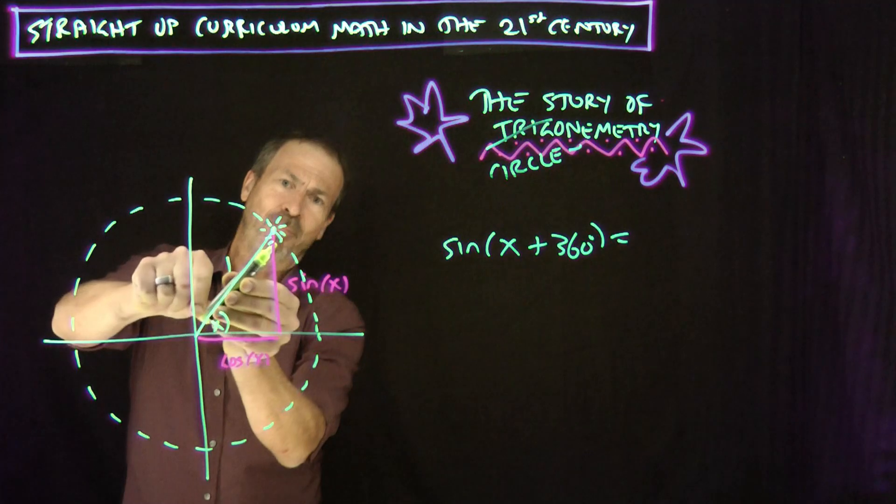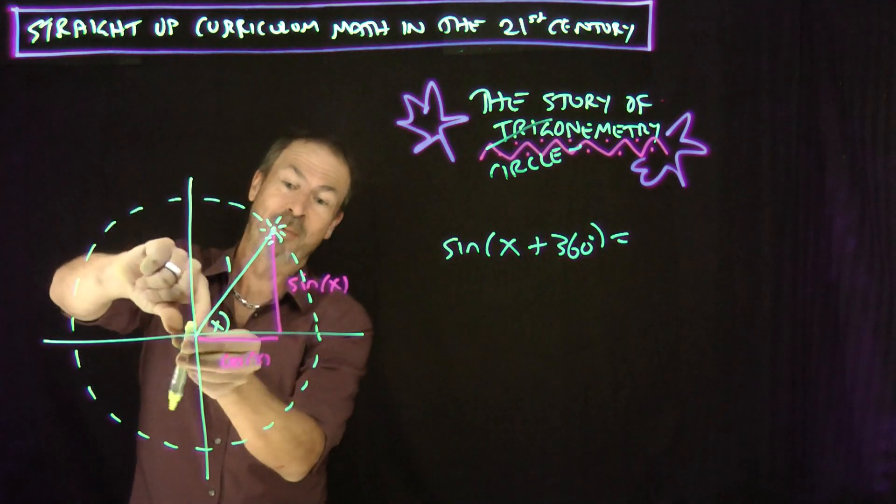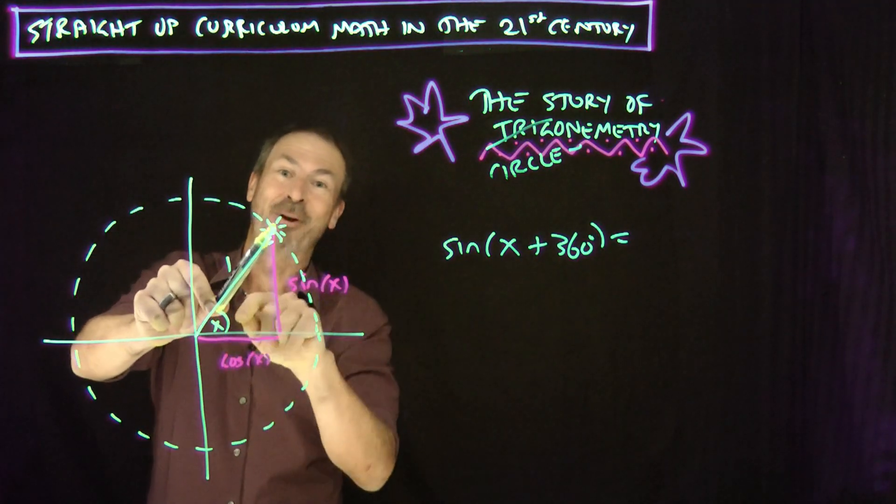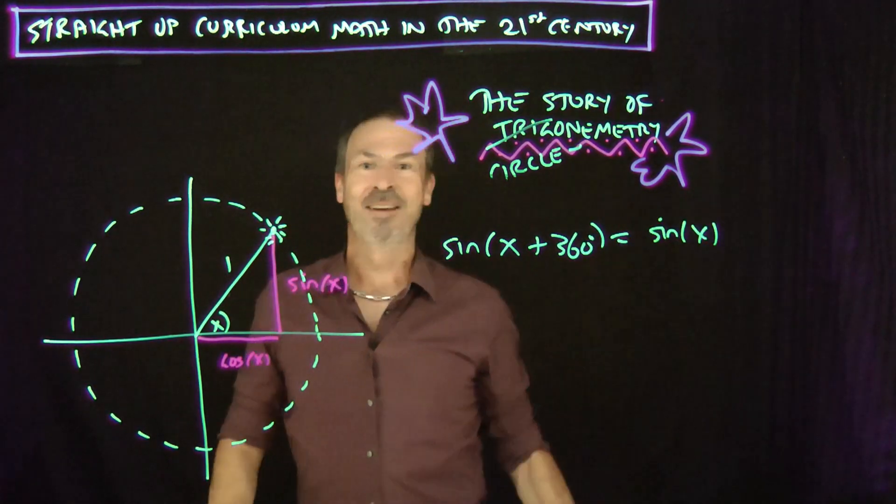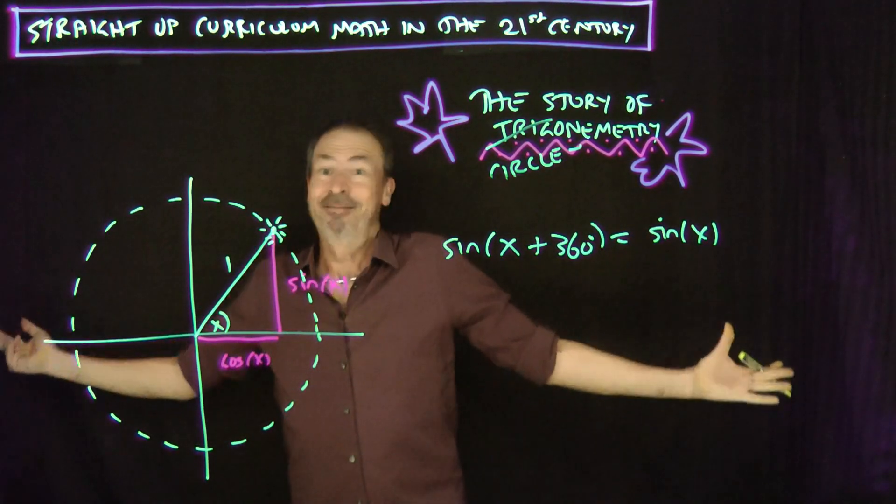If my Sun is at an angle X plus an extra 360 degrees, where would my Sun be? Oh, the same location. What would the height be? It would be the same as it was before. It would be sine of X. There's a trigonometry! Done!